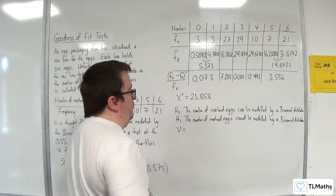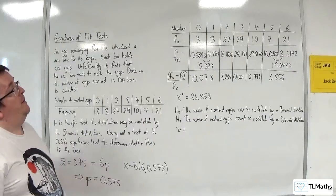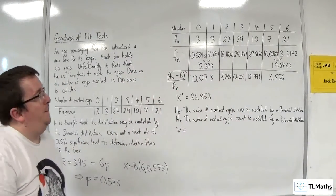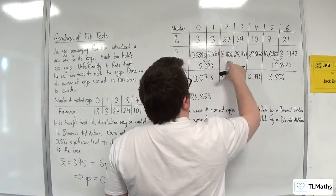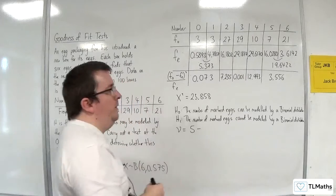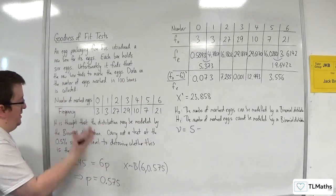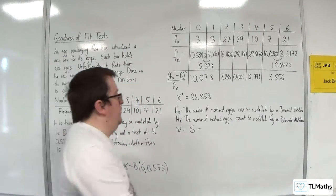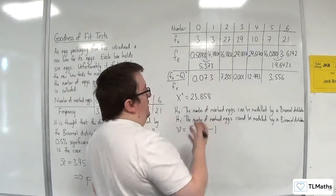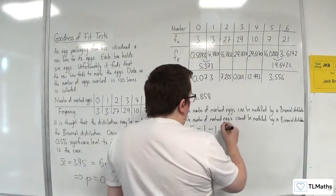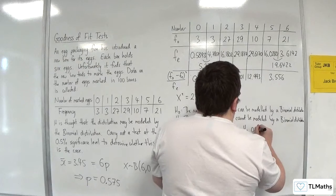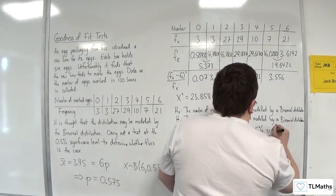Now, the number of degrees of freedom. We originally had seven columns, but we had to combine some. So we reduced that down to 1, 2, 3, 4, 5. So there are five columns. We take away the fact that we've got the estimated parameter, so we've got to take one away for that. And we've got to take away one because of the number of columns. And so we get three at the 0.5% significance level.